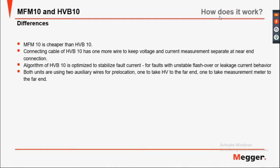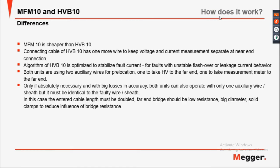Both units use two auxiliary wires for pre-location: one to take the HV to the far end and one to take the measurement meter to the far end. Only if absolutely necessary, and with big losses in accuracy, both units can be operated with one auxiliary wire, but it must be identified to the faulty wire sheath. In this case, the entered cable length must be doubled. The far end bridge should be low-resistant, big-diameter, solid clamp to reduce influences on the bridge resistance.